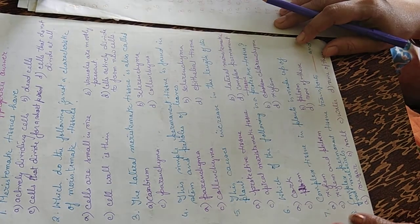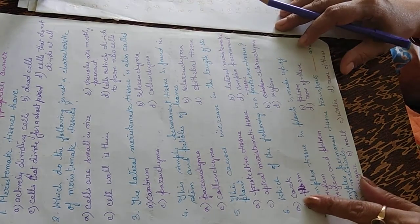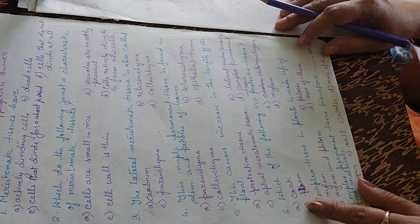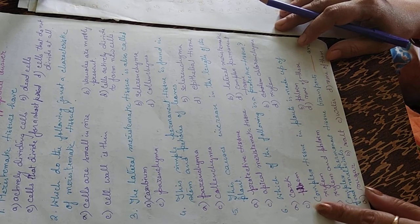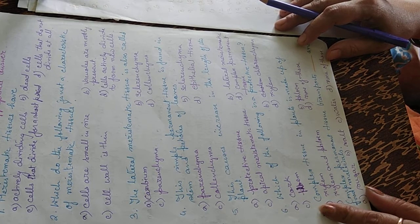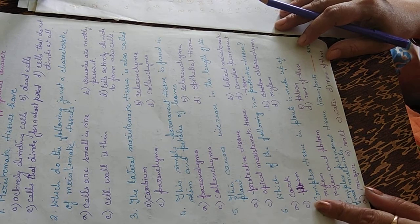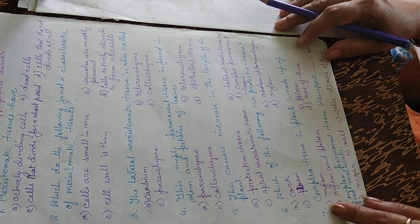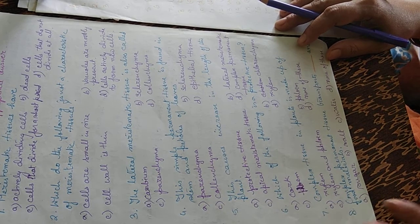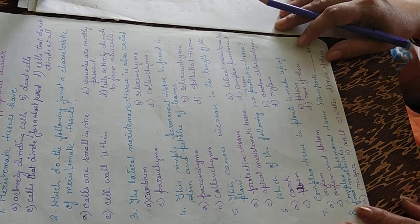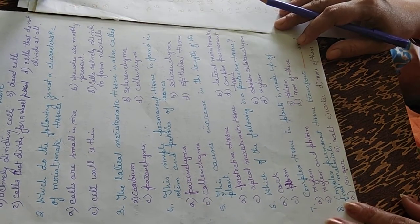Which of the following is a protective tissue? Options are cork, colenchyma, phloem, and xylem. The sixth answer is cork — those are dead cells.